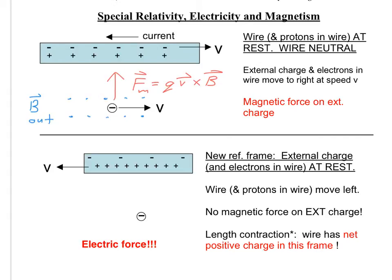Now, in the bottom figure, we're going to look at this exact same scenario, but in a frame of reference where this external negative charge is at rest. This means that the electrons in the wire are also at rest, because in the initial frame of reference, the electrons and the external negative charge were moving to the right with the same speed and same direction — so they're moving together, which means in a frame of reference where one of them is at rest, the others are at rest as well. Meanwhile, the wire itself and the protons in it are all moving to the left.